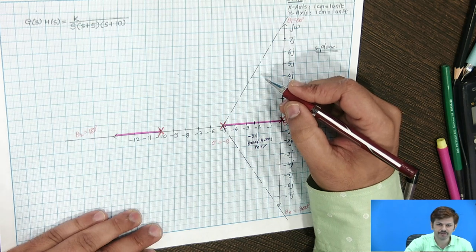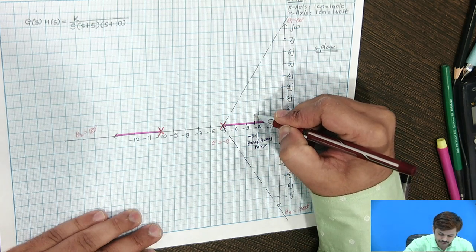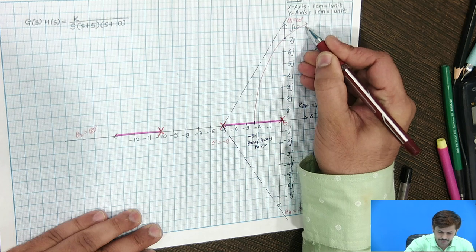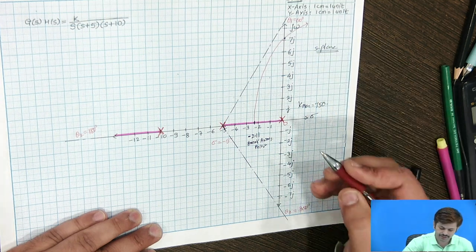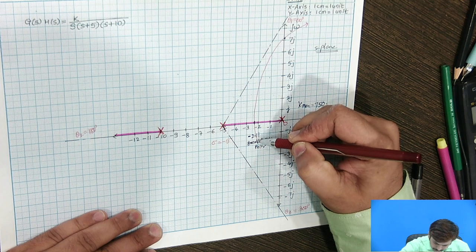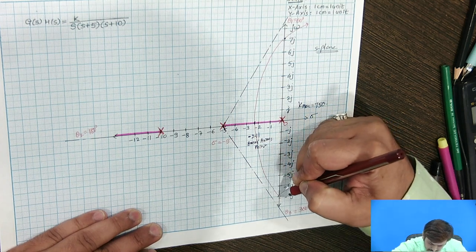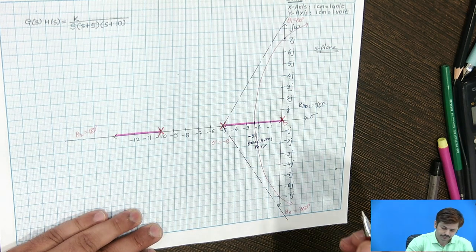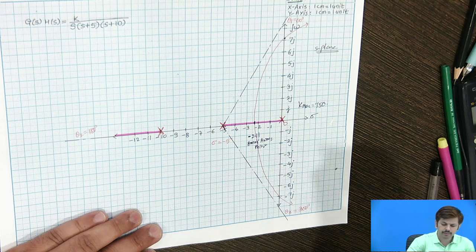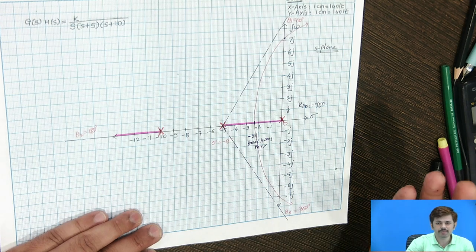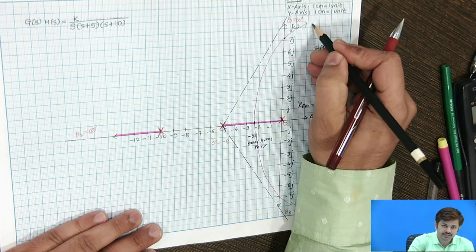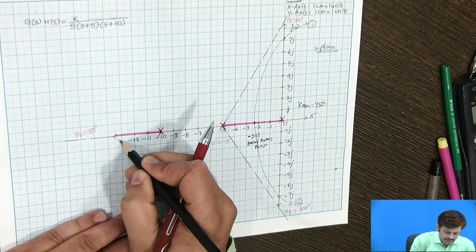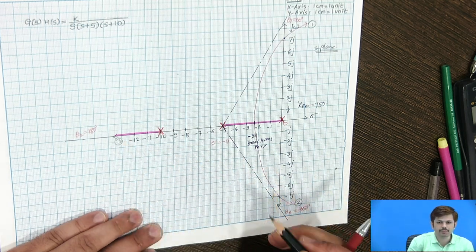From the pole at 0, the root locus starts and cuts the imaginary axis at +7.07j. It also passes through the breakaway point and intersects the imaginary axis at −7.07j. Since P − Z = 3, three branches approach infinity, corresponding to the three asymptotes.